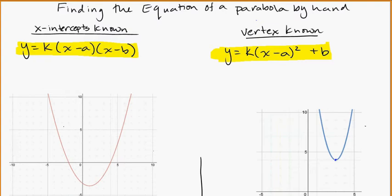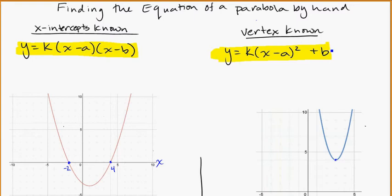I'd like to look at how to find the equation of a parabola by hand when it has a k value, or a scale factor attached to it. There are two formats we generally use when talking about parabolas and transforms. One is using the x-intercepts — when you can actually see them on the graph. In this case we can see there's a negative 2 and a 4 crossing through the x-axis.